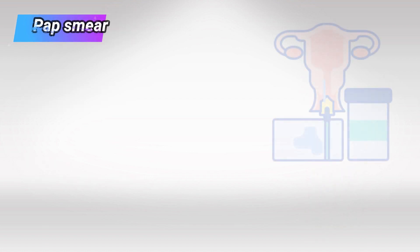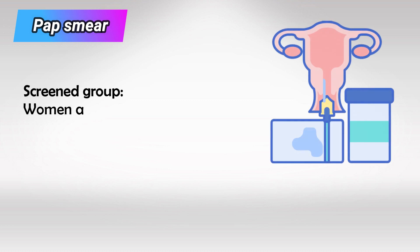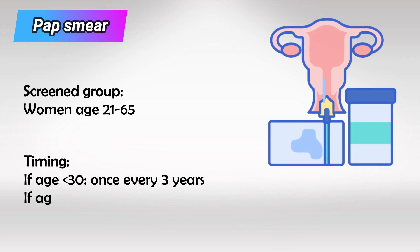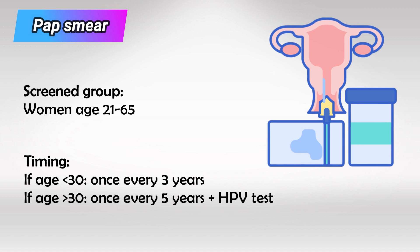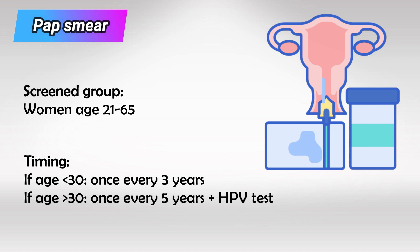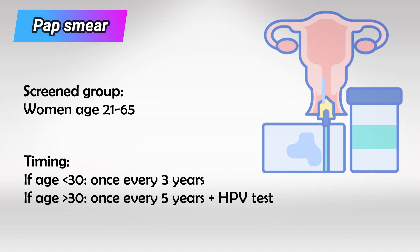Next we have pap smear, and it's for women from the age of 21 till the age of 65. If they are less than 30 years old, we repeat pap smear once every 3 years. If they are older than 30 years old, we do pap smear plus HPV test once every 5 years.